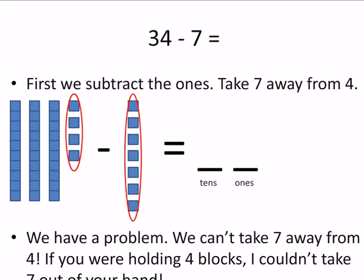What do we do first? We subtract the 1s. So, we take 7 away from 4. Can we do it? No, we have a problem. We can't take 7 away from 4. If you were holding 4 blocks, I couldn't take 7 out of your hand. What are we going to do?